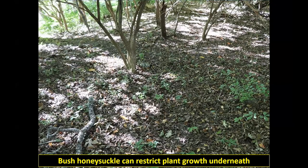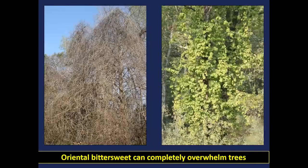Others like bush honeysuckle cast so much shade they can restrict plant growth underneath them — in a small infestation you can see nothing growing underneath, just dirt. That really can drastically impact the quality and diversity of our forests. Others are tree killers: oriental bittersweet can grow over and completely overwhelm trees. There are a lot of ways different invasives can impact our forests, which is why we'll talk at the end about how to manage them.